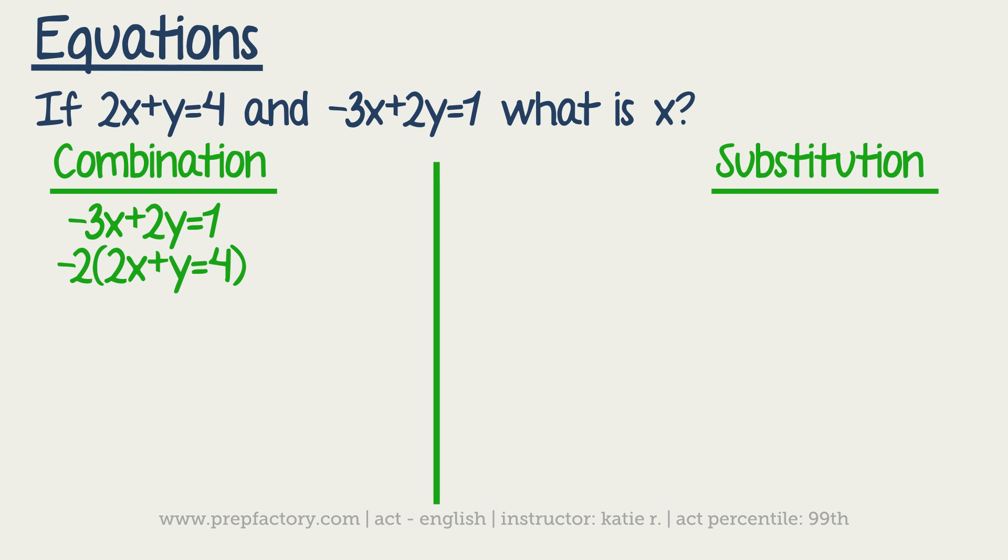So my new equation is the first one, negative 3x plus 2y equals 1. And then negative 4x minus 2y is equal to negative 8. So when I'm going to do combination, I'm going to combine these two that I'm putting a little arrow around. Not the middle equation because I've already mixed it around a little bit so it's easier to deal with.